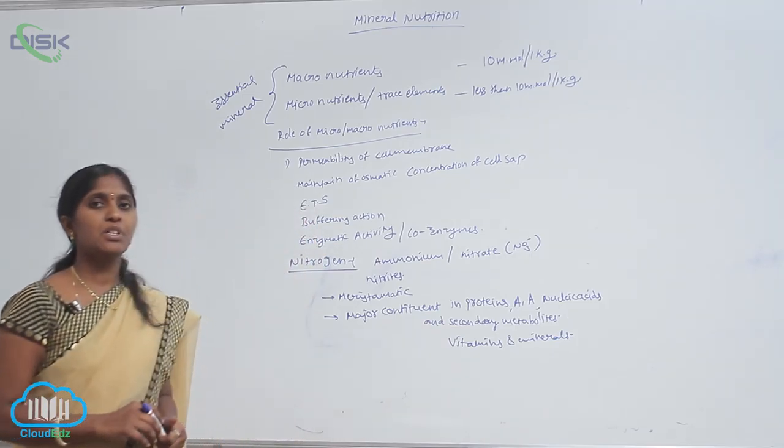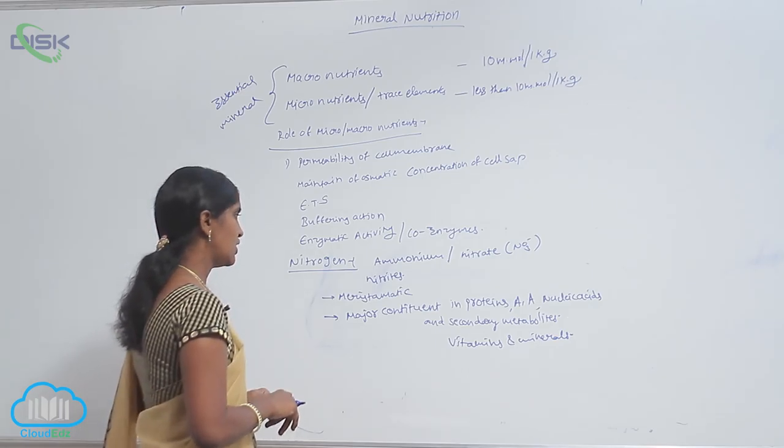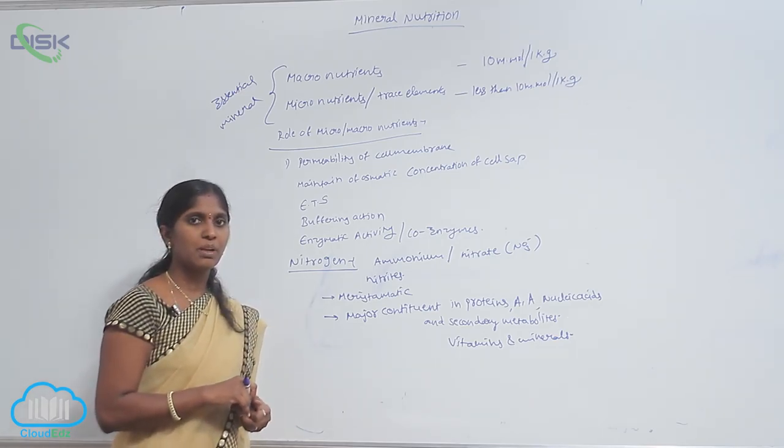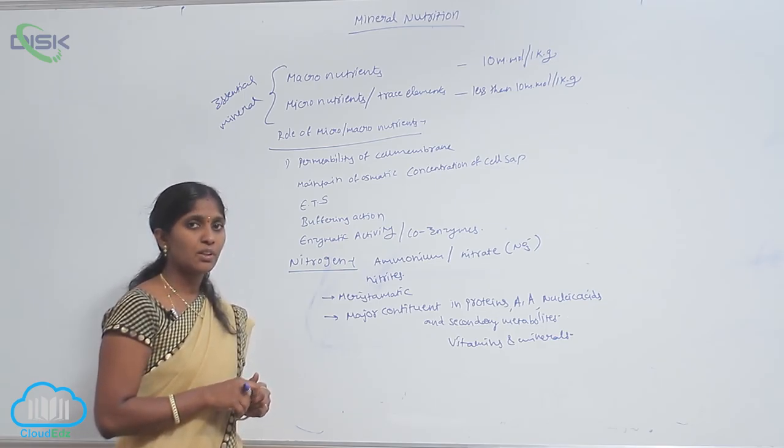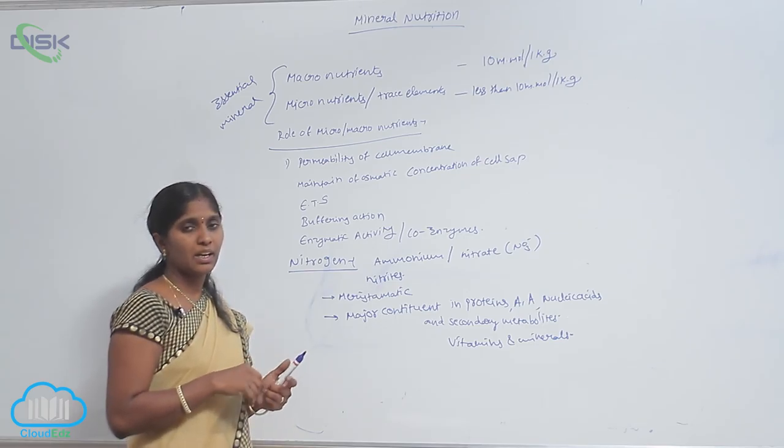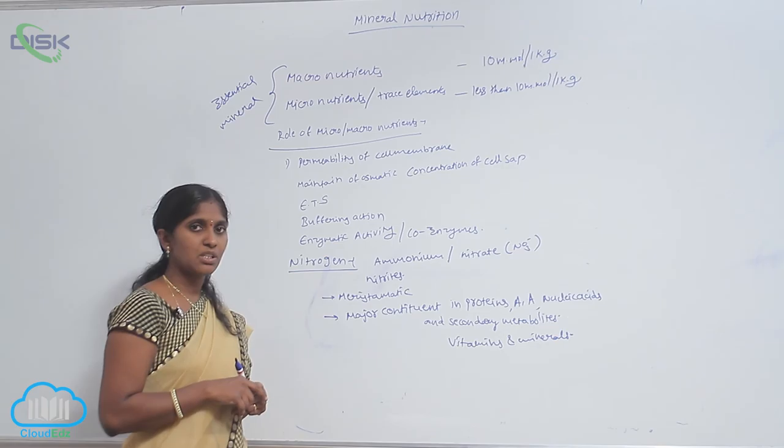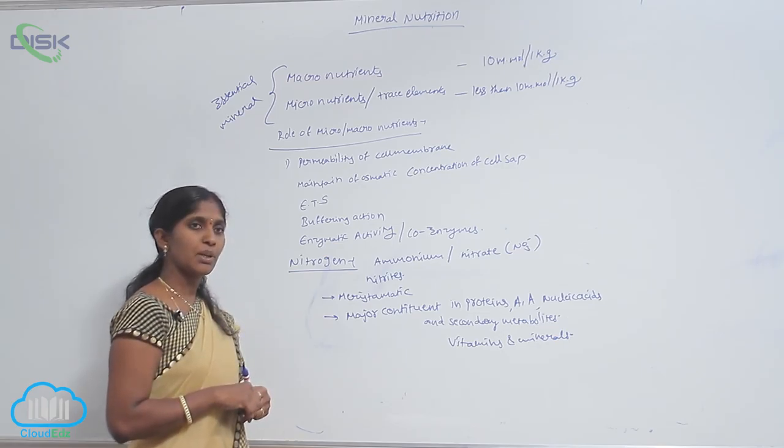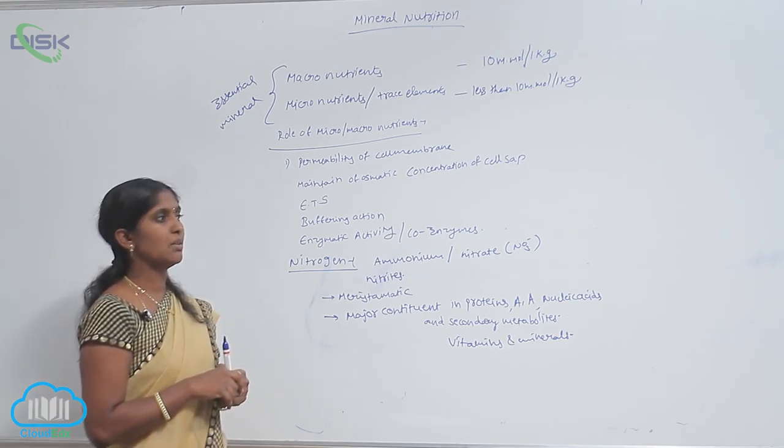Nitrogen is a very essential nutrient. It is essential to every part of the plant body, particularly for meristematic tissue for its rapid development and division. It works as a major constituent for proteins, amino acids, nucleic acids, secondary metabolites, vitamins, and minerals.